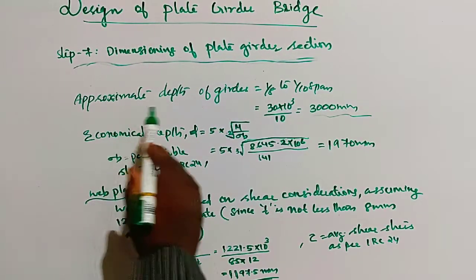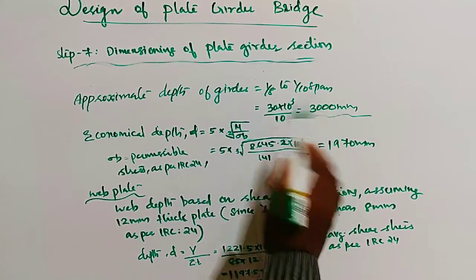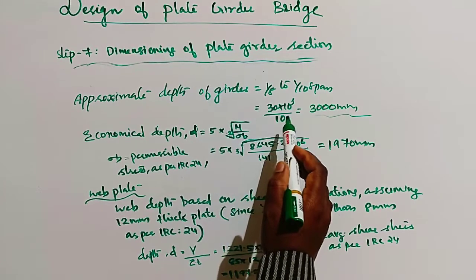In this step, we calculate the approximate depth of girder. It is 1/8 to 1/10 of span. Here, the span is 30 meters.